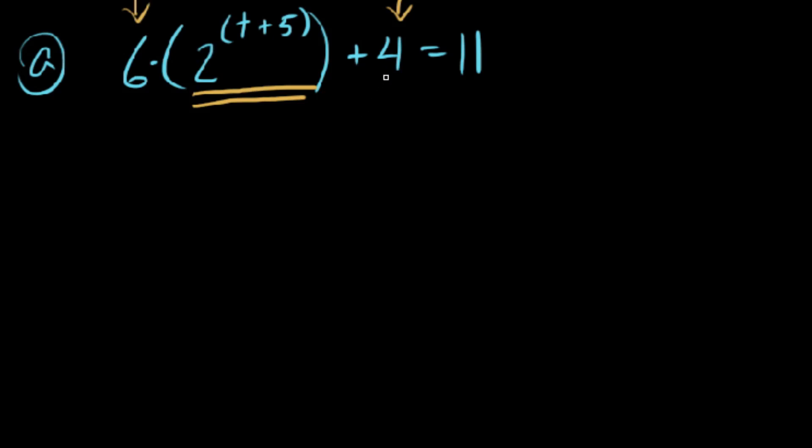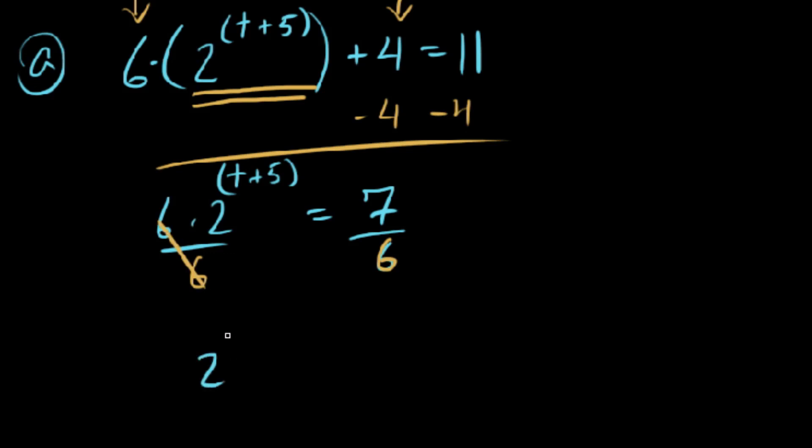So algebraically speaking, this is as simple as we would subtract 4 from both sides here. We end up with 6 times 2 to the t plus 5 power, and this is now equal to 11 minus 4 is 7. So at this point we could take both sides and divide by 6. So we have 2 to the power of t plus 5 is equal to 7 over 6.